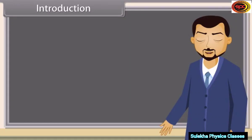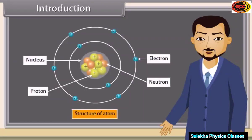Today I'll teach you the topic: structure of atom. Atoms are the fundamental units of matter. Everything around us is made up of atoms. A typical atom consists of a nucleus of protons and neutrons, with electrons orbiting this nucleus.